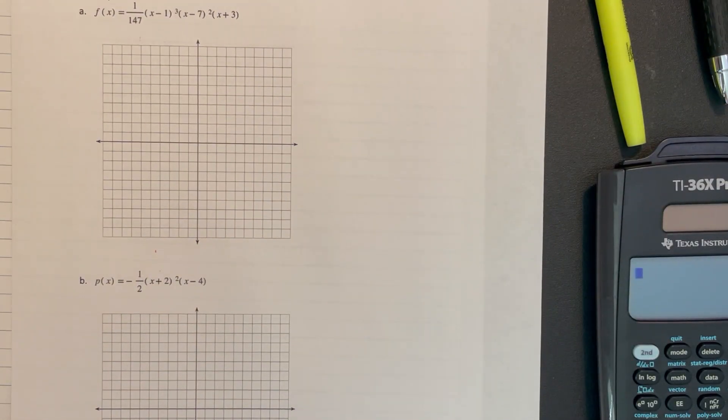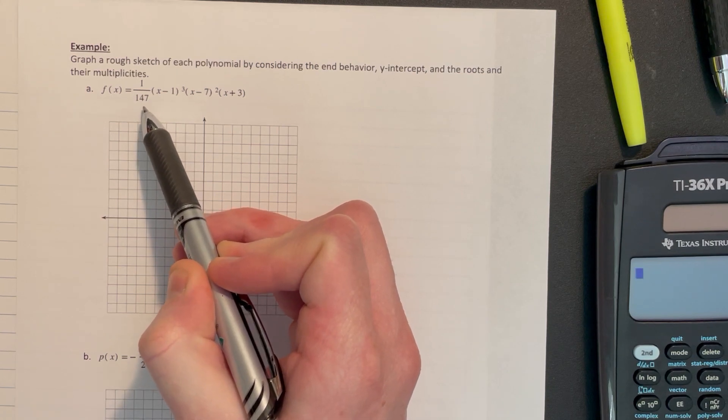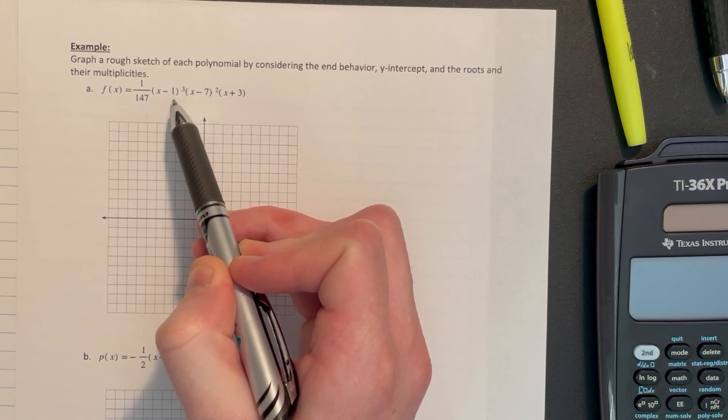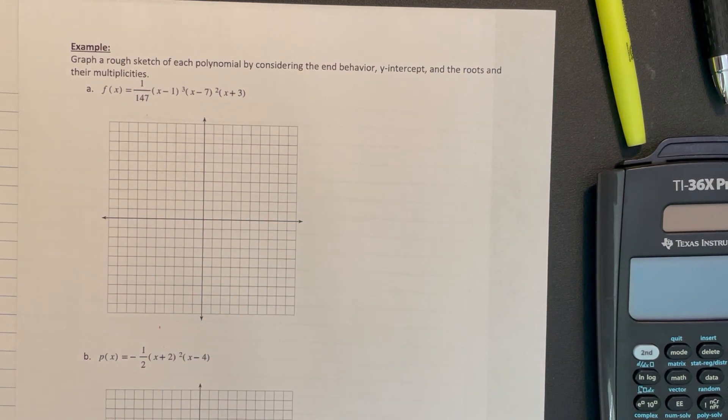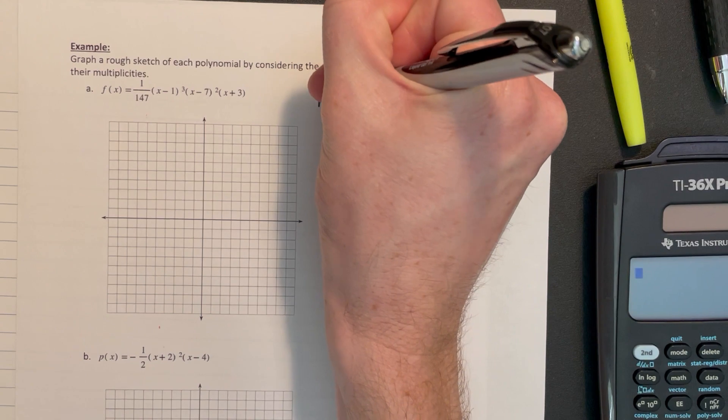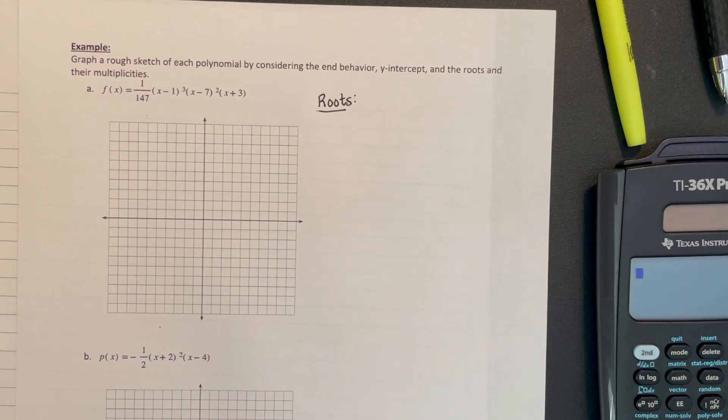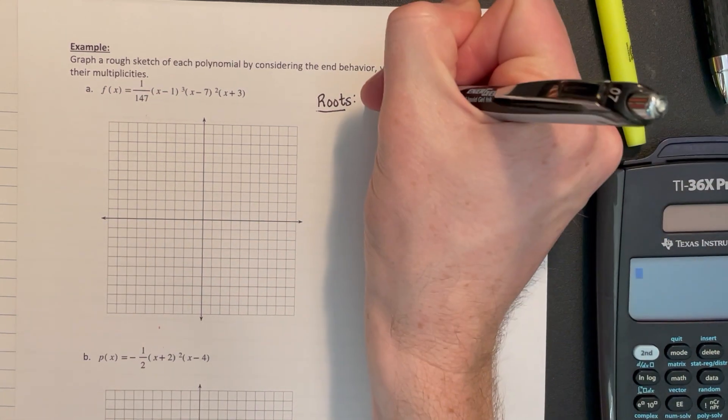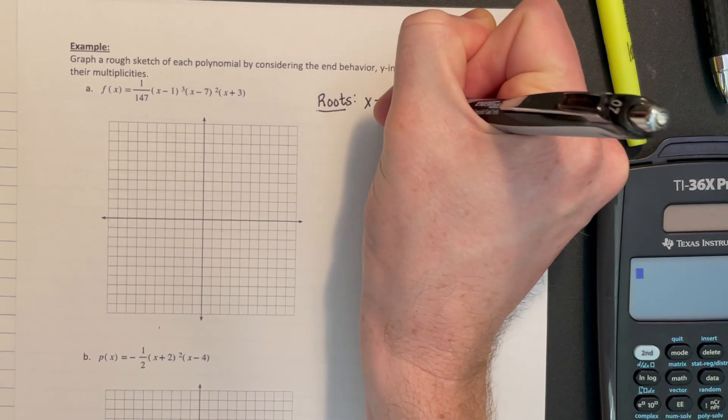We've got two graphs here and we're going to start with this first one that's 1/147 times (x-1)³(x-7)²(x+3). Let's first find the roots since it's already in factored form. I've got a factor of x minus 1. If I set x minus 1 equal to 0 we get x equals 1.